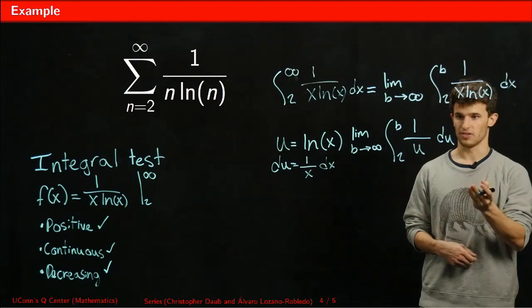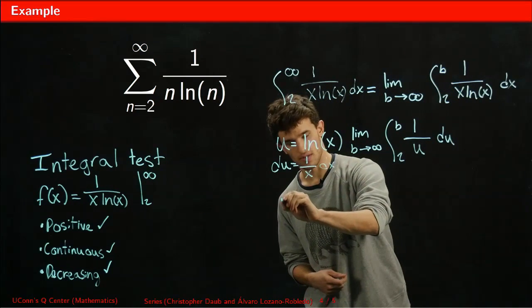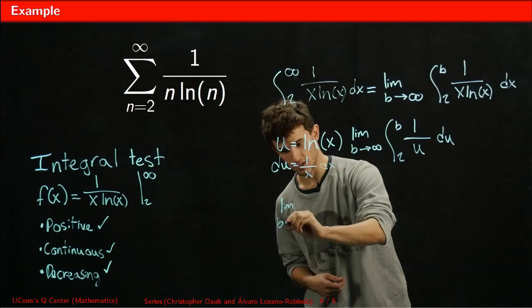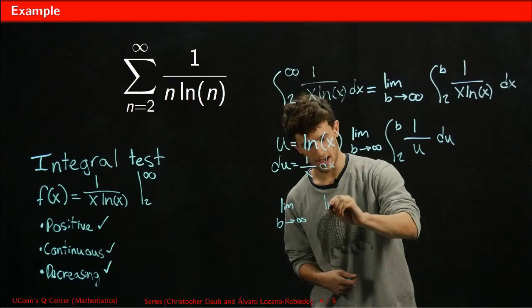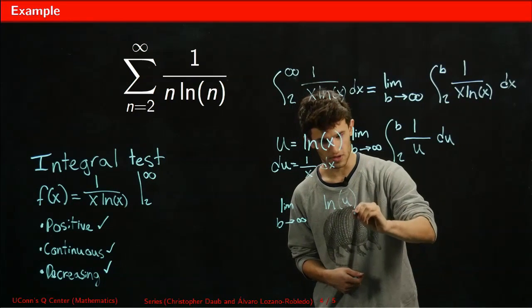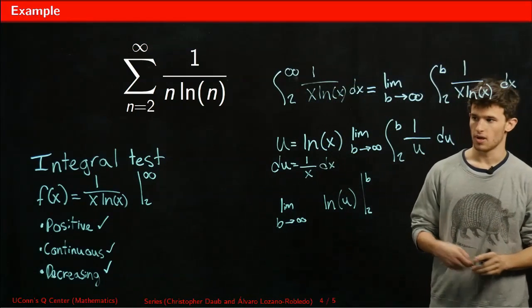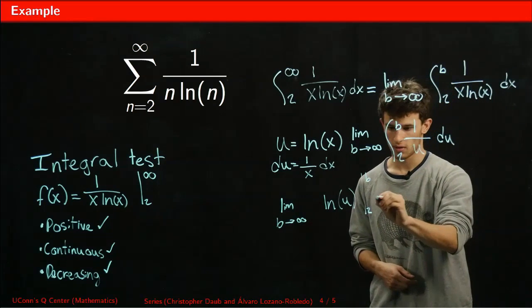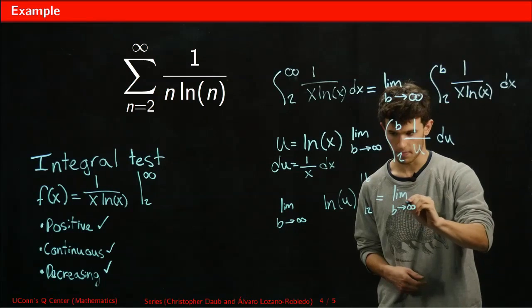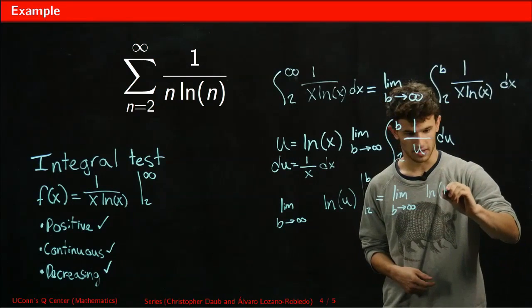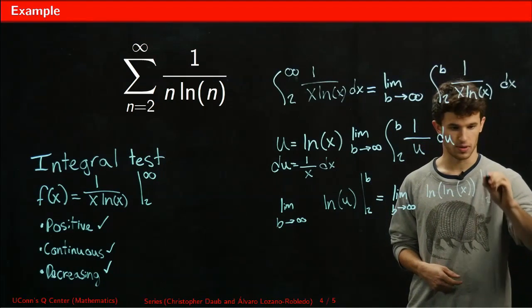All we have to do is do the actual integral. We get 1 over u turns into the limit as b goes to infinity of ln(u) with our bounds 2 and b. Now performing our final substitution, we get the limit as b goes to infinity of ln(ln(x)) with bounds 2 and b.